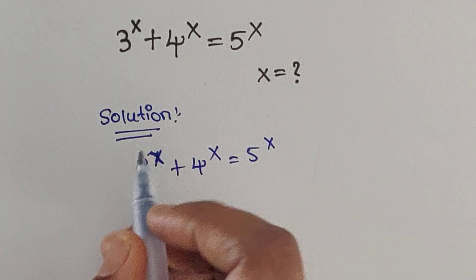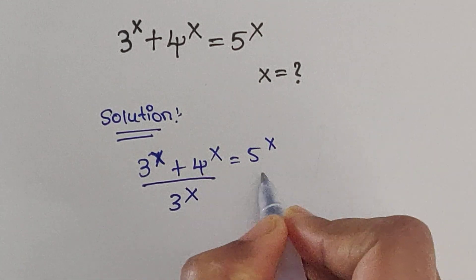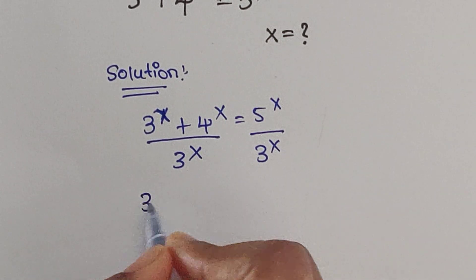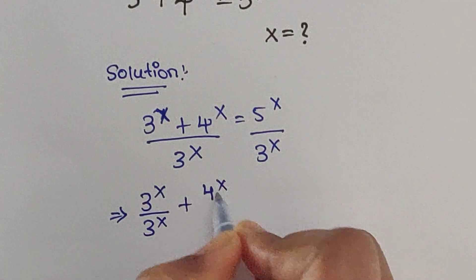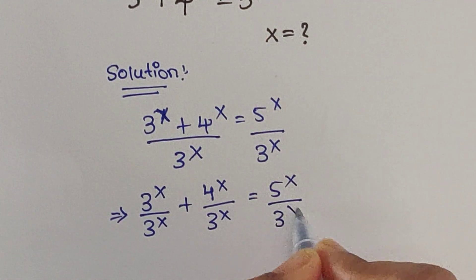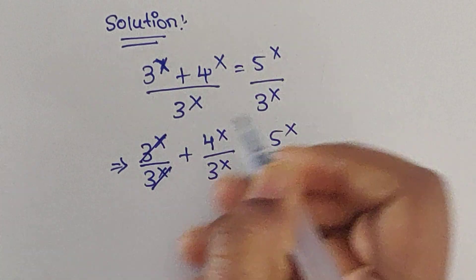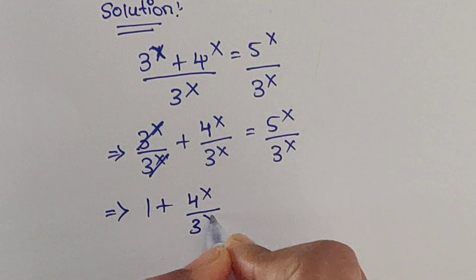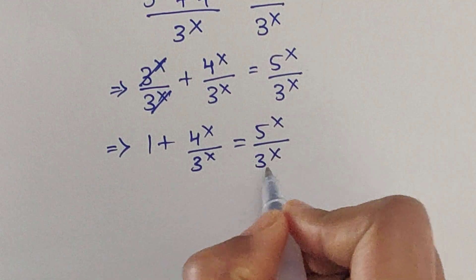First, divide by 3 to the power of x on both sides. So 3 to the power of x divided by 3 to the power of x, plus 4 to the power of x divided by 3 to the power of x, equals 5 to the power of x divided by 3 to the power of x. Now 3 to the power of x divided by 3 to the power of x gets cancelled, and we get 1 plus 4 to the power of x by 3 to the power of x, equal 5 to the power of x divided by 3 to the power of x.